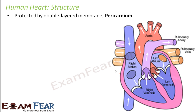The word 'cardio' is related to the heart — that is why a doctor who has specialization in the heart is called a cardiologist. The cycle of the heart is called the cardiac cycle. Similarly, the membrane which surrounds the heart is called the pericardium.